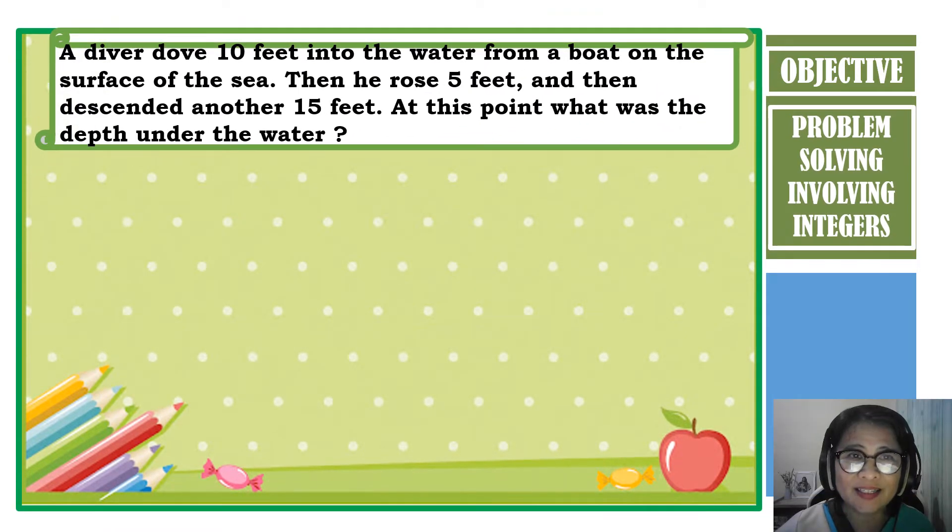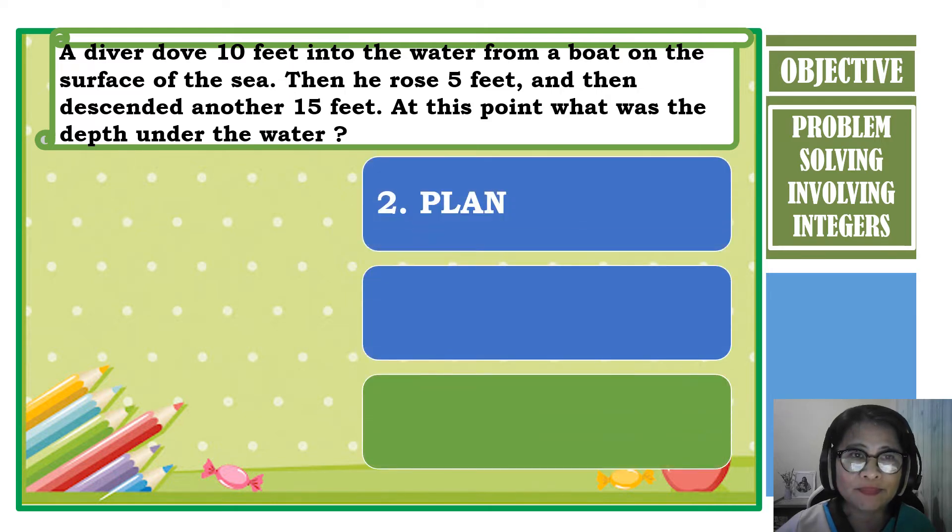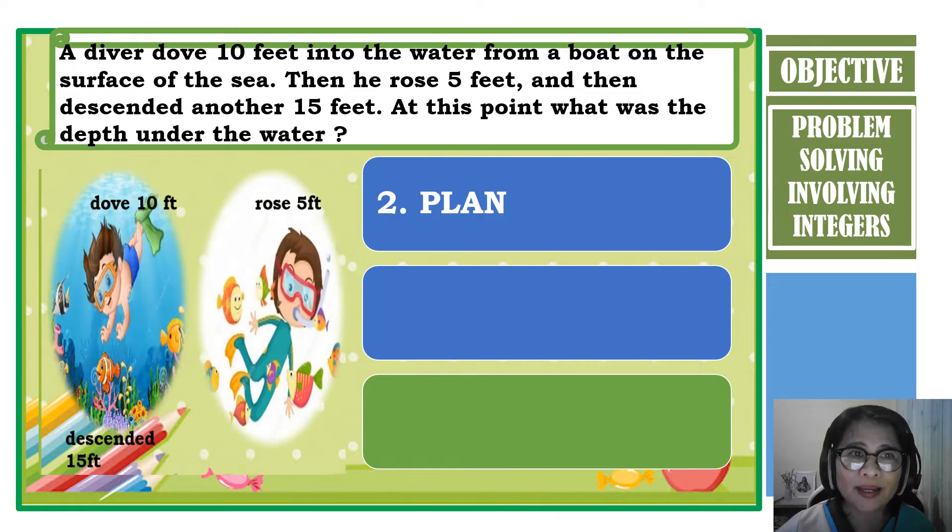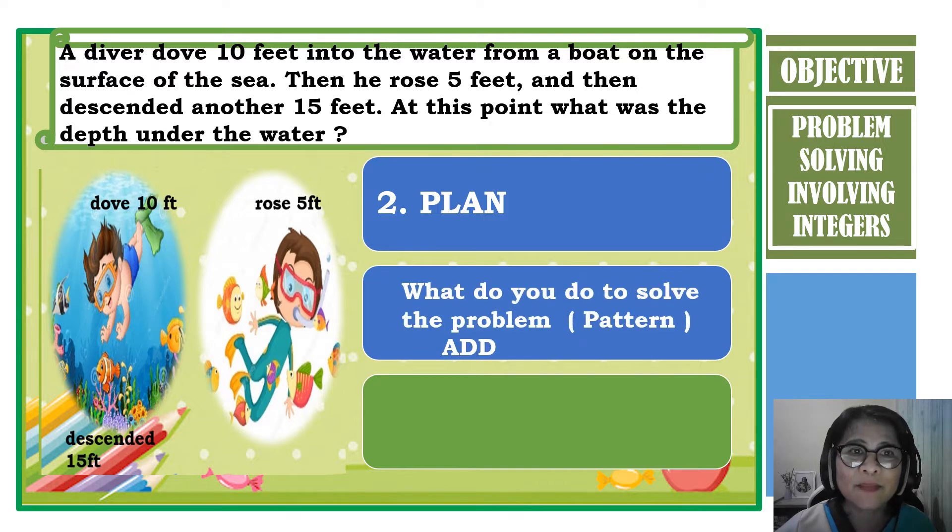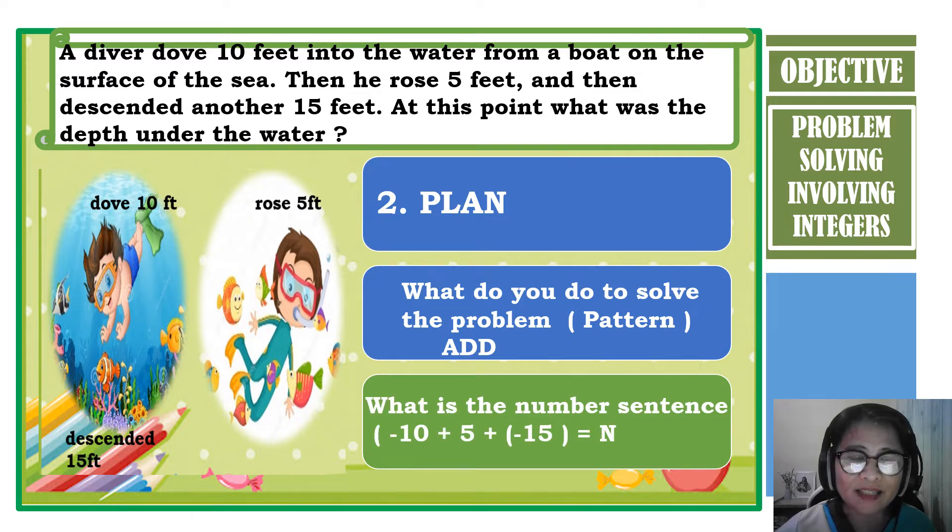After understanding, we need to plan what to do to solve the problem. From the given information, the keyword, the pattern, the ups and downs of the diver will help us to do the plan. And then make a number sentence out of it. The operation to be used is addition. The number sentence is negative 10 plus 5 plus negative 15 is equal to n.